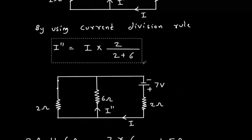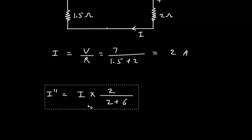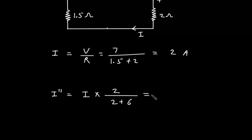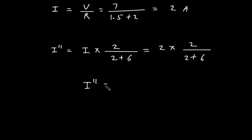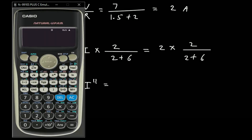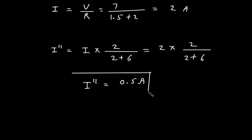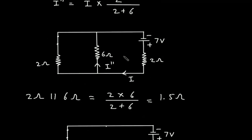From the total current we can find I double prime. I double prime equals 2 amperes multiplied by 2 divided by 2 plus 6, which gives 0.5 amperes. The direction of I double prime is upward.